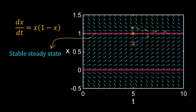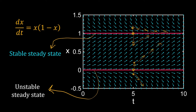Now check the behavior around the other steady state x equal to 0. If I pull down x to a lower value, with time x will move away from x equal to 0. The same will happen if I change x to a slightly higher value. x equal to 0 is called an unstable steady state.